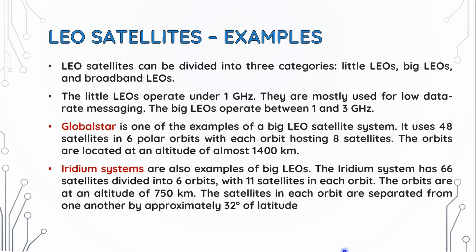The Iridium system is also an example of Big Leos. The Iridium system has 66 satellites divided into 6 orbits, with 11 satellites in each orbit. The orbits are at an altitude of 750 km, and the satellites in each orbit are separated from one another by approximately 32 degrees of latitude.